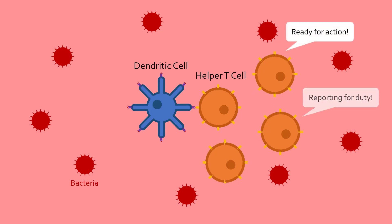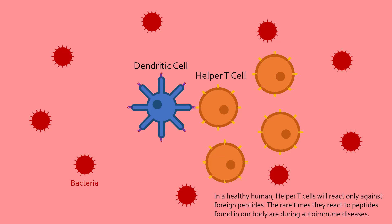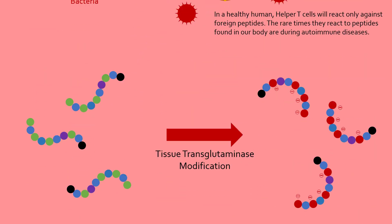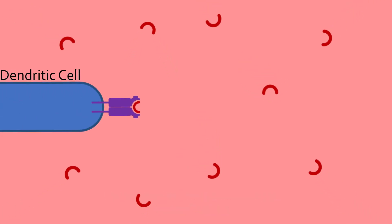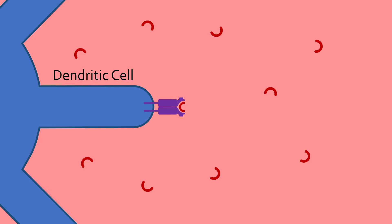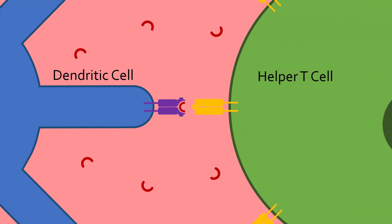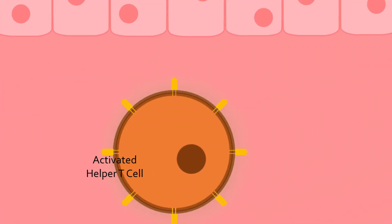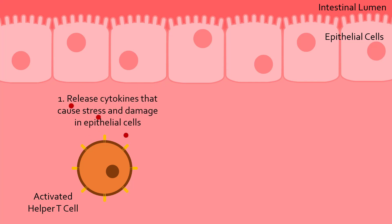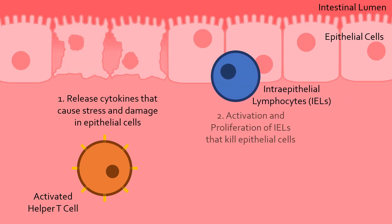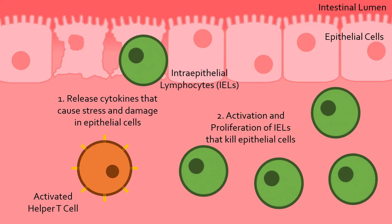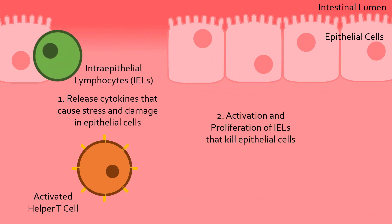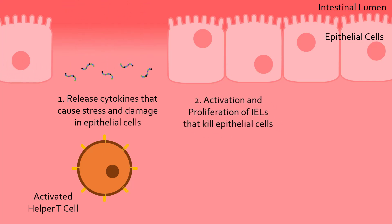T-cell receptors are designed so that they won't bind to any peptides normally found in our body, so helper T-cells are only activated when they find something that doesn't belong. In the case of gluten, modified gluten peptides are found and displayed by dendritic cells on their MHC class II proteins. Since gluten peptides aren't normally found in our body, the appropriate helper T-cell is activated. These helper T-cells release inflammatory molecules to cause stress to the epithelial cells, and also release molecules that cause activation and proliferation of intraepithelial lymphocytes, which recognize and kill these stressed epithelial cells, causing more gluten peptides to flow in and exacerbate the situation.